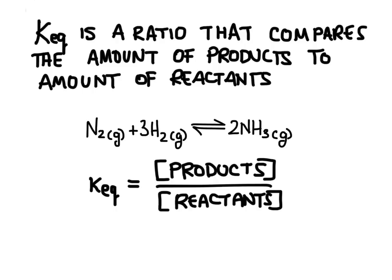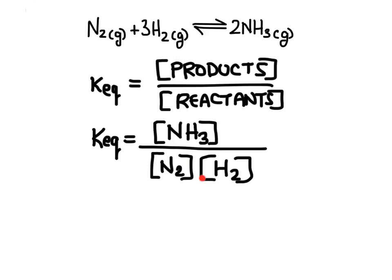To calculate K_eq, we measure the concentration of each substance. We take the concentration of the products and divide by the concentration of the reactants. If there is more than one product or reactant, we multiply their concentrations together. We also look at the coefficient in front of each substance and raise the concentration to that power. For example, there's a 2 in front of ammonia, so we raise its concentration to the power of 2; nitrogen has a coefficient of 1 and H₂ is raised to the power of 3. Concentration is always measured in units of moles per liter.